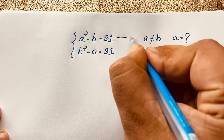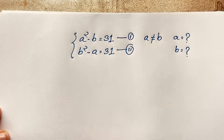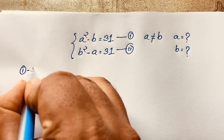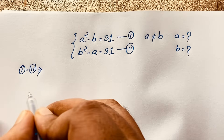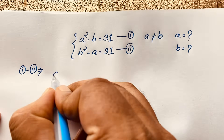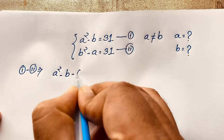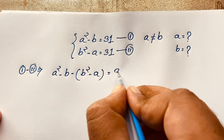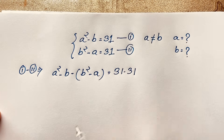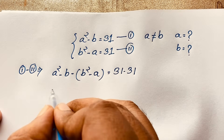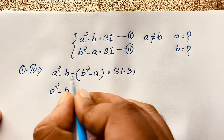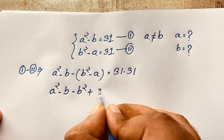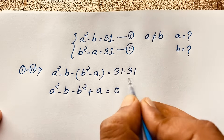This is our first equation and this is our second equation. First of all, I subtract our first equation from our second equation. Our first equation gives A squared minus B, minus our second equation gives B squared minus A, and 31 minus 31 equals 0.